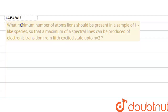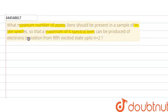Hello everyone. The question given to us says: what minimum number of atoms should be present in a sample of hydrogen-like species so that a maximum of six spectral lines can be produced from electronic transitions from the fifth excited state up to n equals to two?